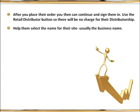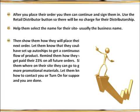After you place their order, continue to sign them in. Use the retail distributor button so there's no charge for their distributorship, and walk them through the sign-in process. Help them select a name for their site — usually it'll be the business name. Show them how they'll place their next order, let them know they can set up auto-ships for continuous product flow — even one weekly, two cases each time, whatever way they want. Remind them they'll get paid 23% on all future orders, and show them where on their site they can get more promotional materials.